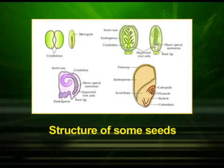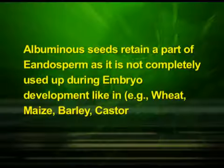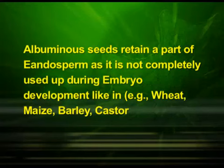Mature seeds may be nonalbuminous or albuminous. The nonalbuminous seeds have no residual endosperm, as it is completely consumed during embryo development, like in pea, groundnut, sunflower, etc. Albuminous seeds retain a part of endosperm, as it is not completely used up during embryo development, like in wheat, maize, barley, castor, etc.